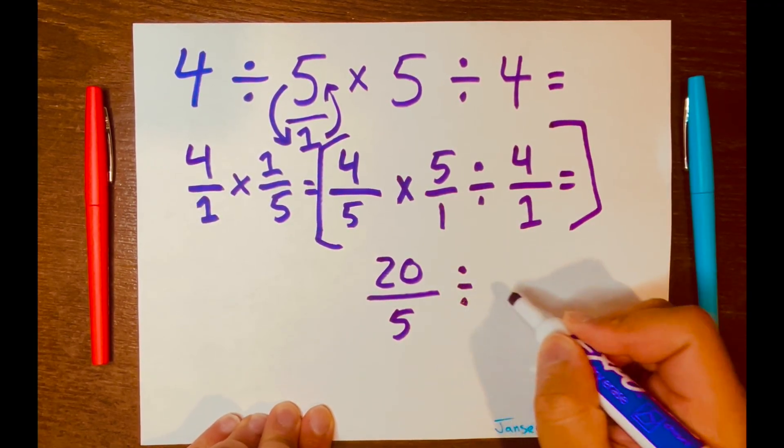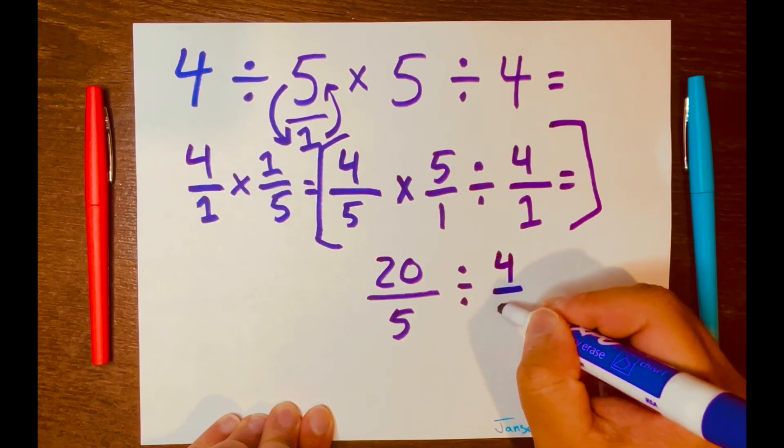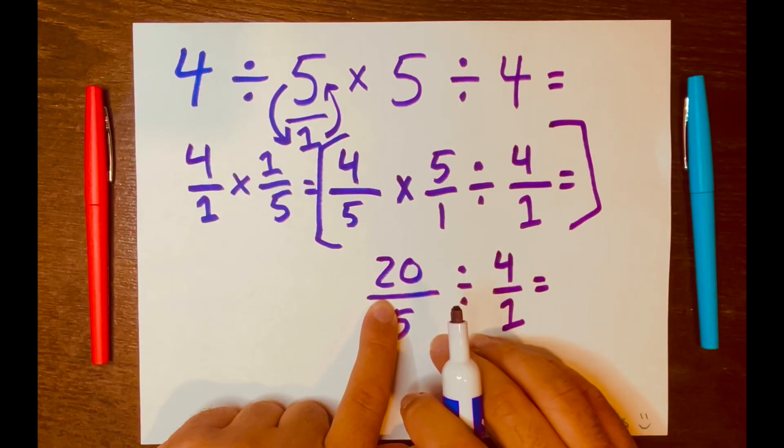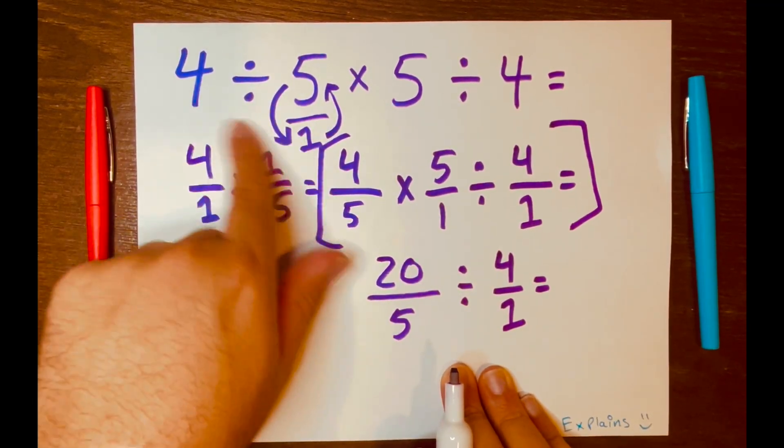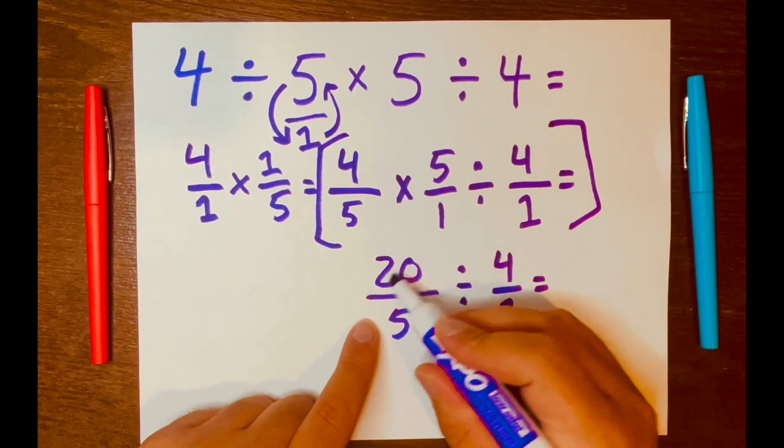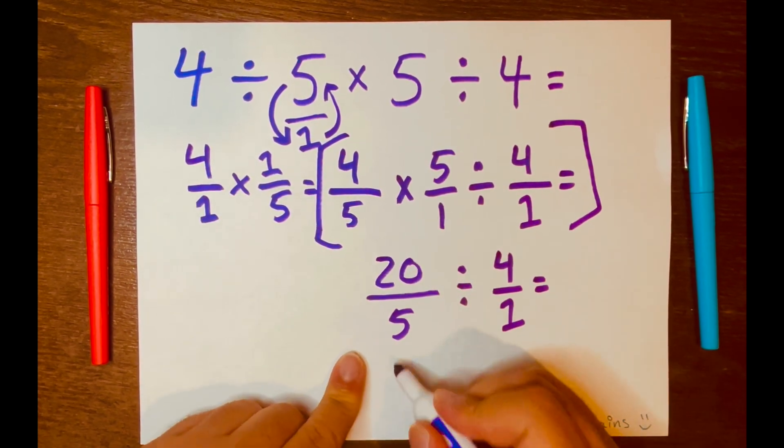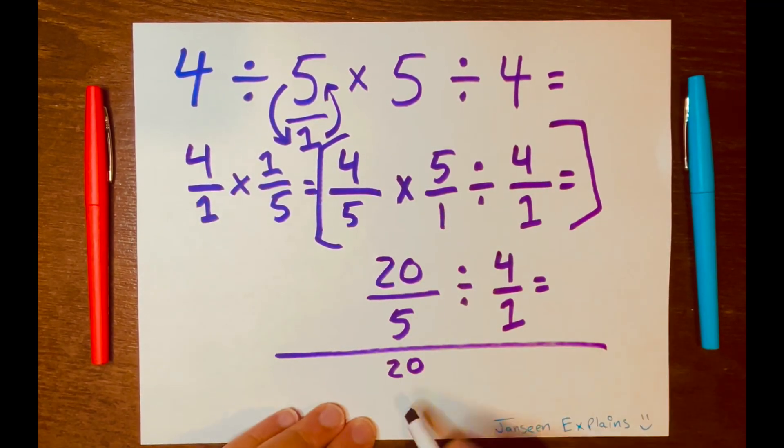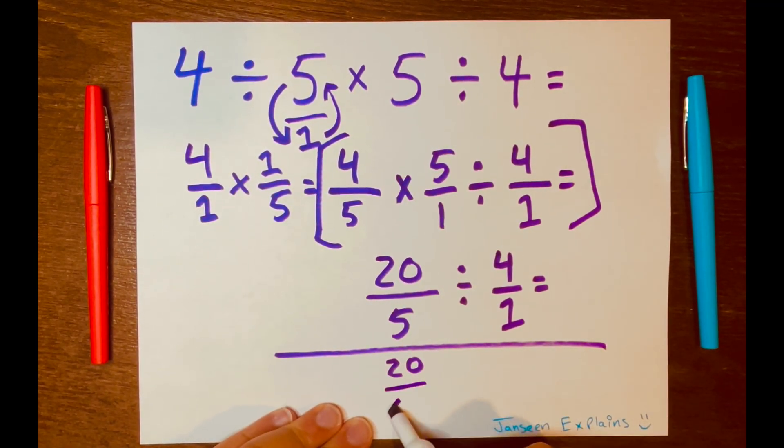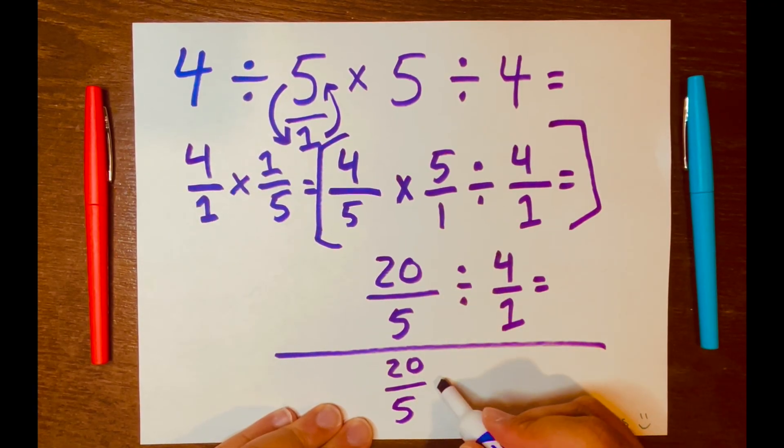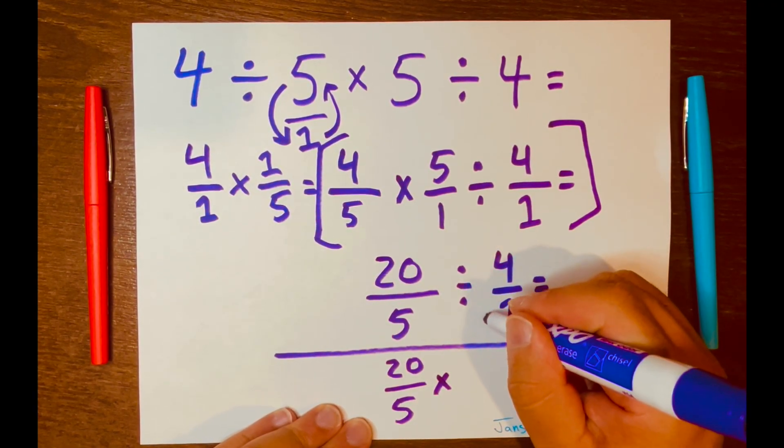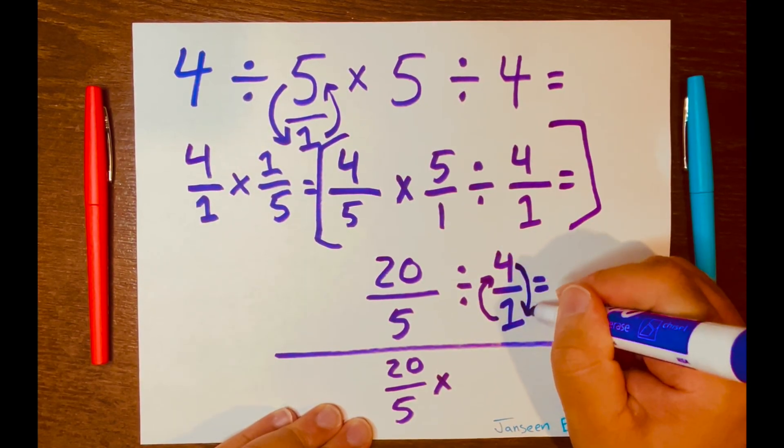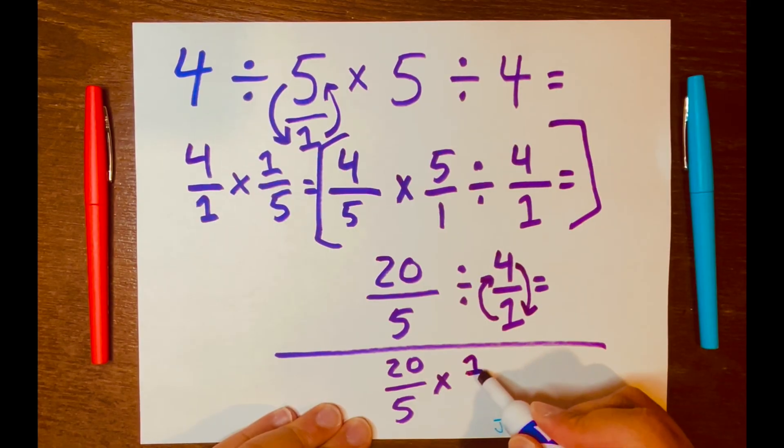And then I'll bring down the division symbol down. And then the 4 over 1 down. And then here we can just use that same keep change flip method that we use up here at the start. So we keep the 20 over 5. And now I'll just split both parts. 20 over 5 we keep. We change the division symbol to multiplication. And then we'll flip this fraction. So the 1 will go on top of the fraction. The 4 will go at the bottom of the fraction. So it'll be written like this, 1 over 4.